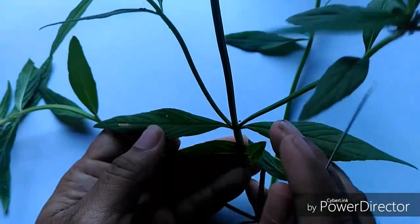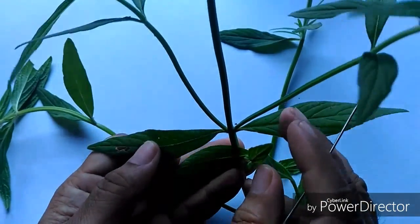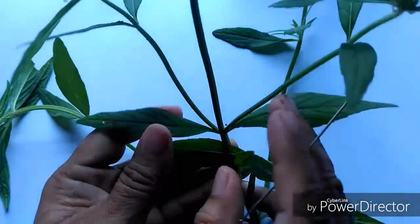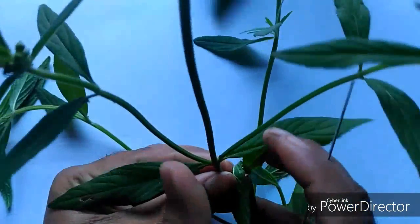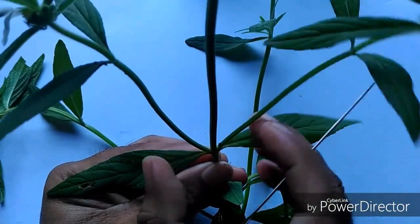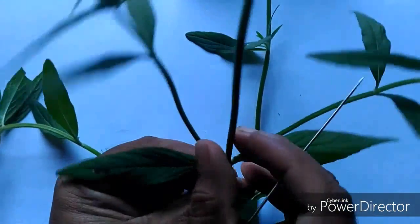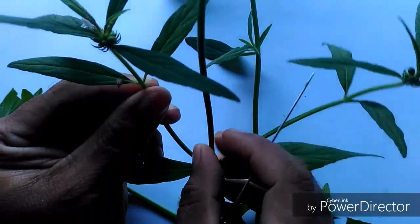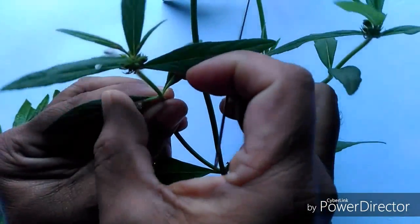And regarding phyllotaxy, the position of leaves are opposite. Leaves are opposite to each other. Two leaves, they are opposite to each other. Hence, it is called opposite.